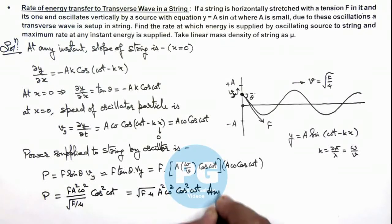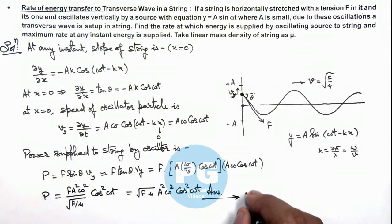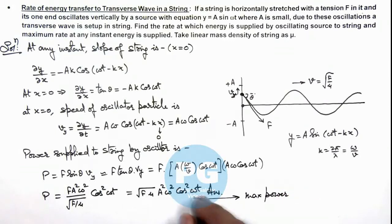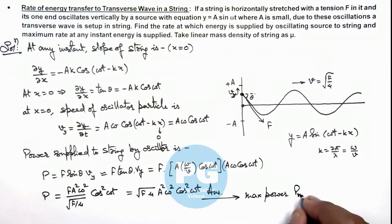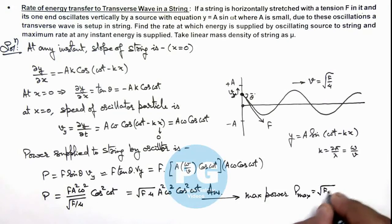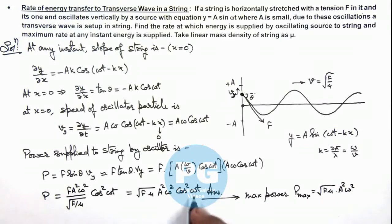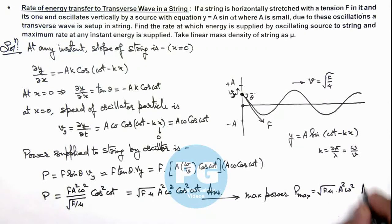From here, if we calculate the maximum power, the maximum value of this power is directly given as √(f·μ)·Ay²·ω², since cos²(ωt) will be maximum at 1. So this is the result of the maximum power rate at which energy is being supplied to the string.